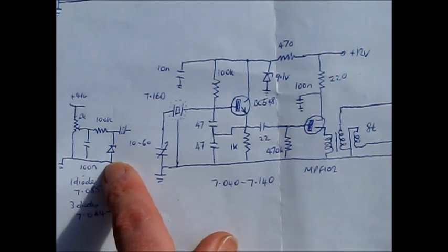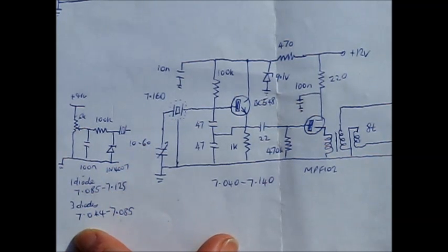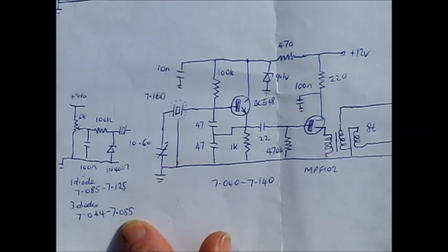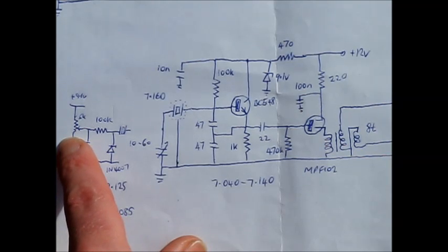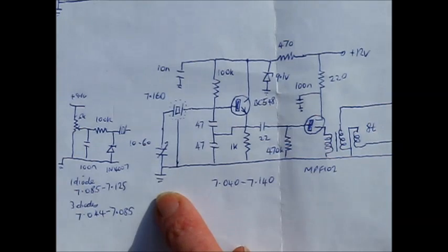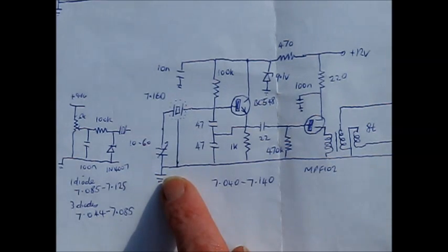Or, putting in three diodes instead of one gives you a lower frequency range, 7.044 to 7.085. Because they're smaller tuning ranges, it's easier to tune with a potentiometer without a vernier reduction drive. Although the downside is the variable capacitor will give you a bigger tuning range, mainly because of its lower minimum capacitance.